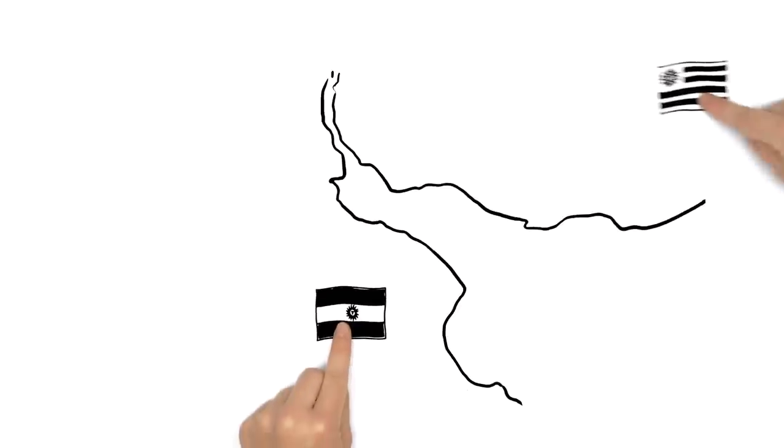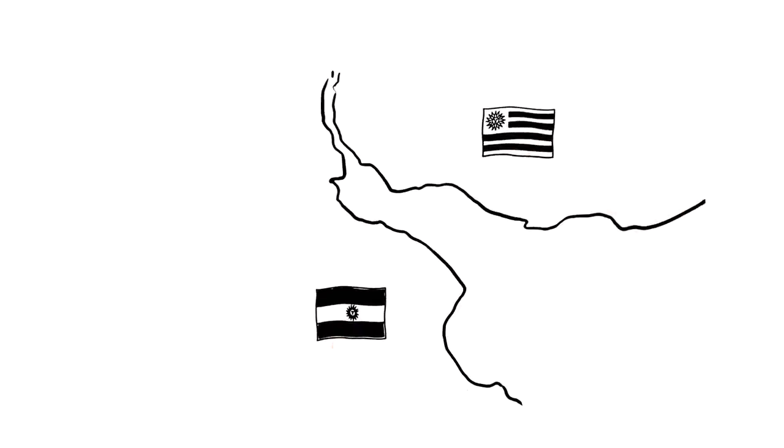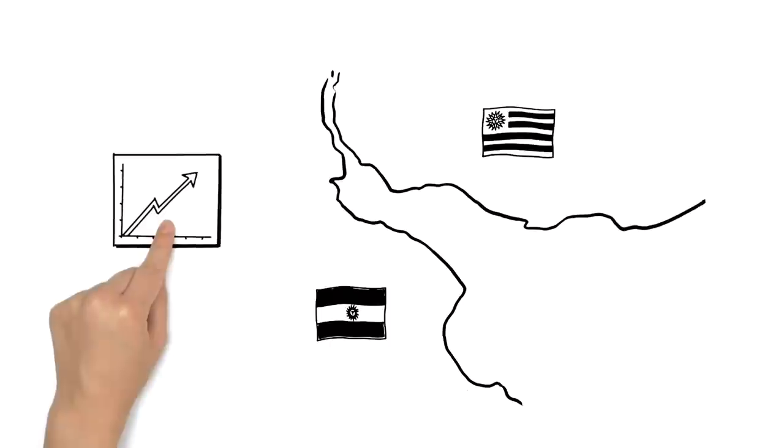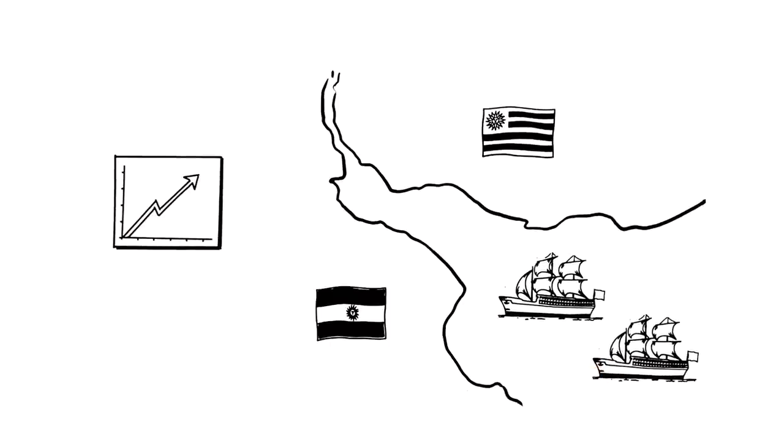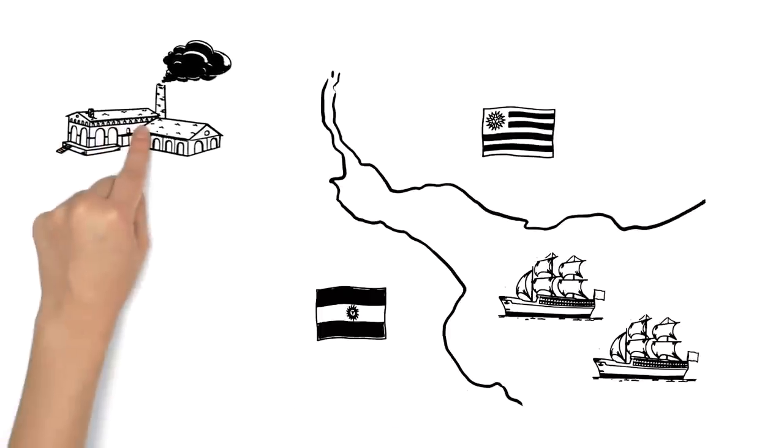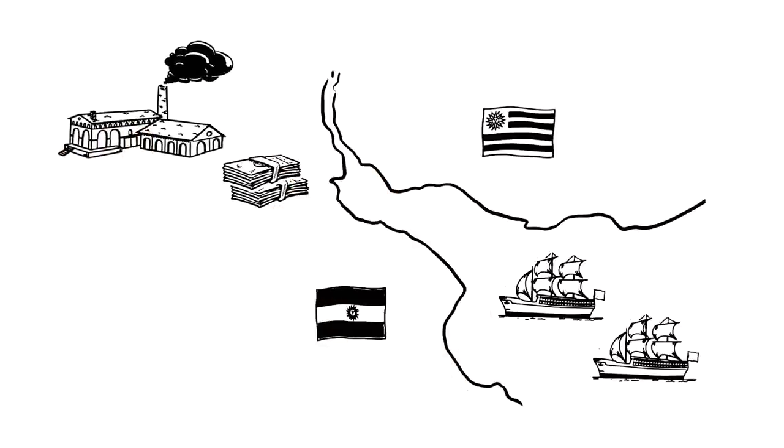The La Plata River is the natural border between Argentina and Uruguay. In the 19th century, as part of a development program, immigrants flocked there from all different countries and cultures. They were hoping for work and prosperity, but for many of them their dreams did not come true.